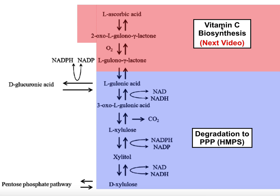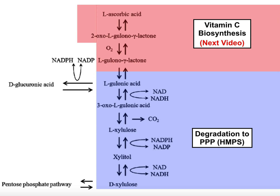One of the ways, which is going to be the biosynthesis of vitamin C or ascorbic acid, we'll see in the next video. Here, we're going to look at a straight degradation pathway, which is going to convert glucuronic acid into something useful, and we'll see that it's actually going to be something that enters the pentose phosphate pathway, also called the hexose monophosphate shunt. Let's look at that pathway here.